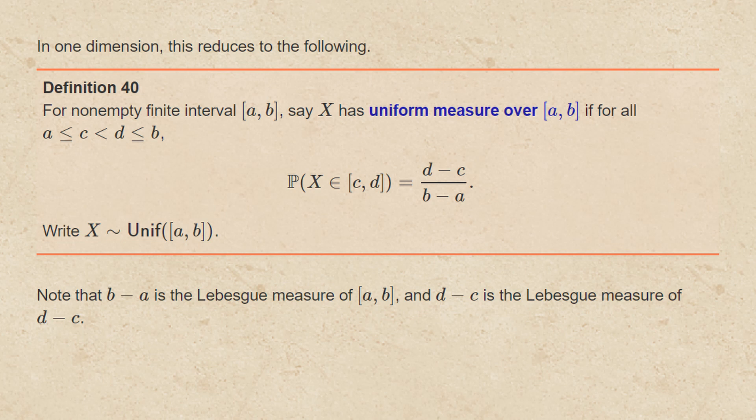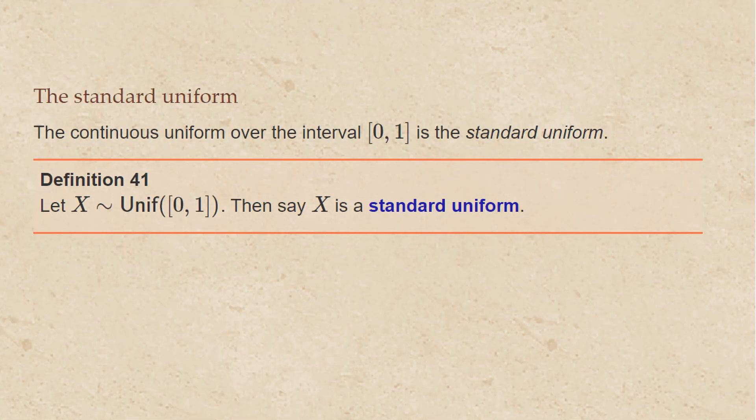We write x as distributed uniformly over the closed interval from a to b. If we're talking about the continuous uniform over the interval from 0 to 1, this is the standard uniform. So if x is distributed uniformly over [0, 1], we say that x is a standard uniform.